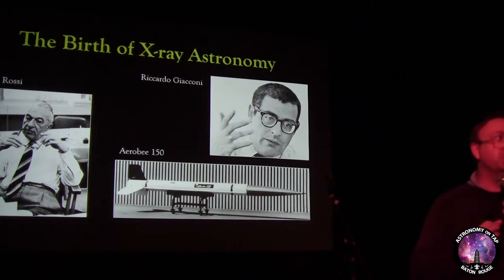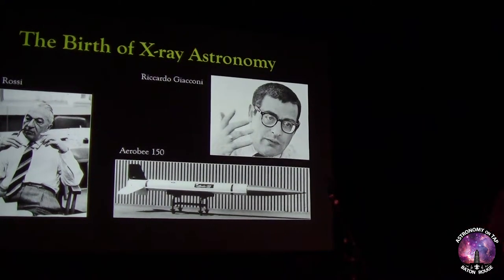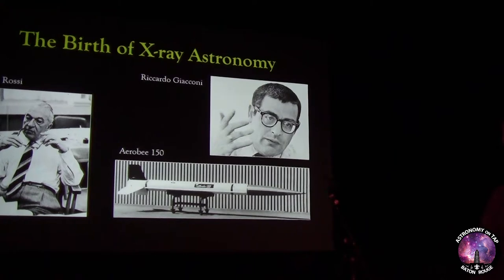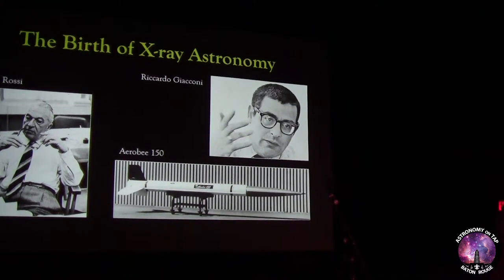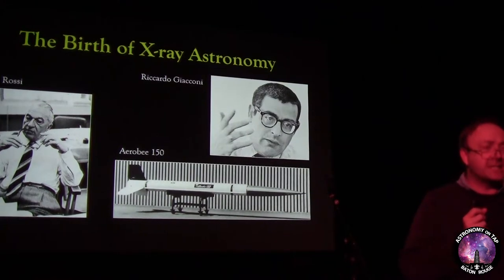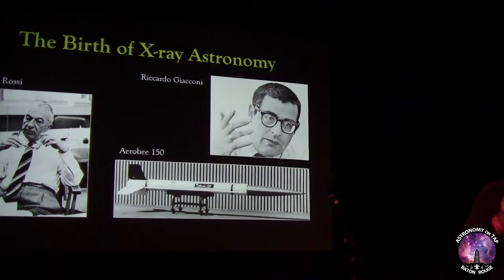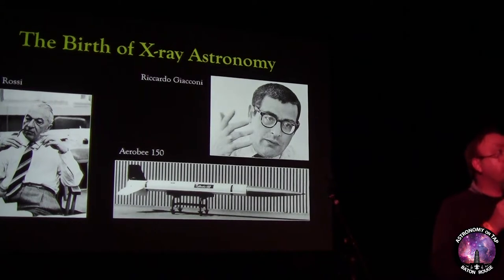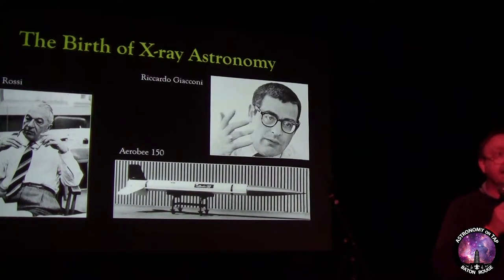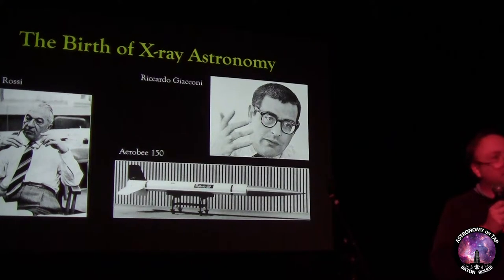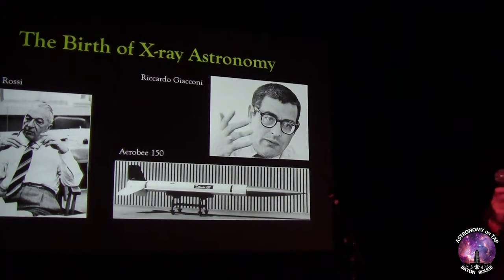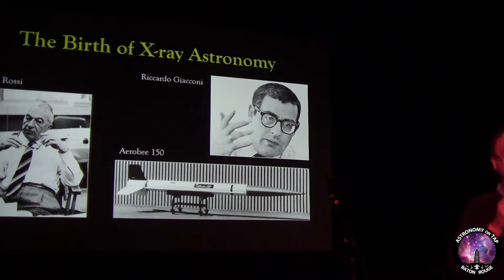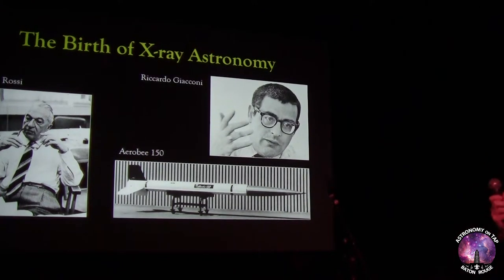The biggest problem at the time was they didn't know why they would do astronomy in space. They did calculations — we knew the sun is bright in X-rays — but they couldn't convince NASA there was anything else to see. Rossi's argument was probably the best: every time people have gone and looked where they haven't looked before, they found something new. NASA called it a fishing expedition and told them to go away, so they went to plan B.